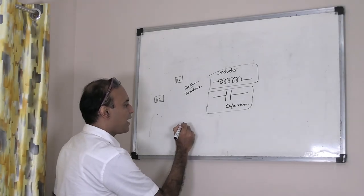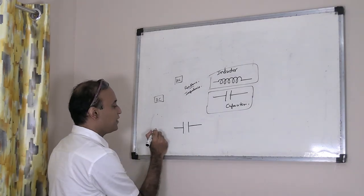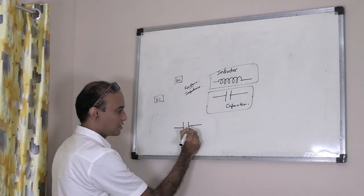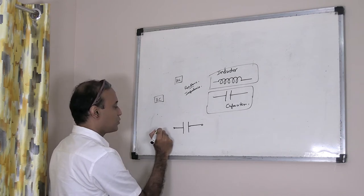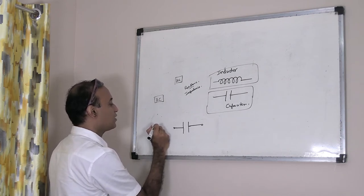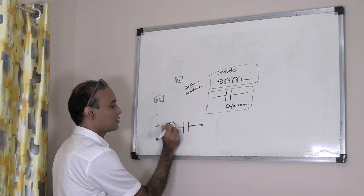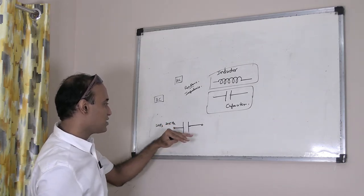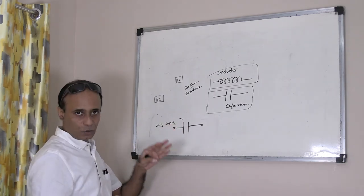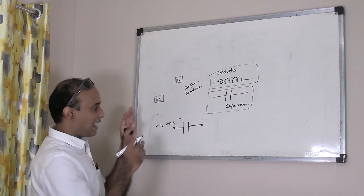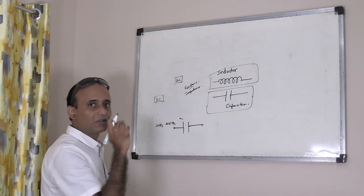A capacitor works contrary to an inductor. If we feed it with an audio signal consisting of frequencies between 20 Hz and 20 kHz, it offers impedance to lower frequencies and lets higher frequencies through. Depending on its capacity, which is measured in farads — or more practically microfarads, nanofarads, picofarads — it is going to resist low-frequency signals.